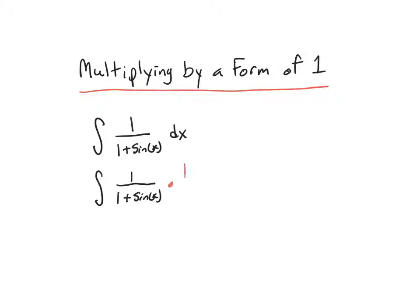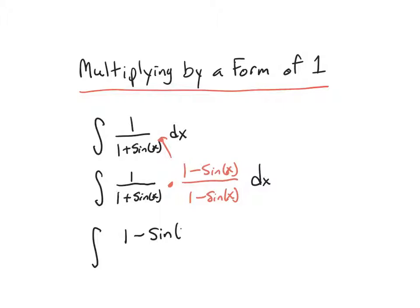We're going to multiply by 1 minus sine of x over 1 minus sine of x. This trick works more often than you might think. I've multiplied by a form of 1 and stuck it in right here between the 1 over 1 plus sine of x and the dx. That turns this indefinite integral into a different version of itself. When I multiply the numerators, I get 1 minus sine of x, and when you multiply the denominators, you get 1 minus sine squared of x.